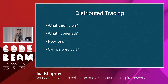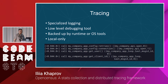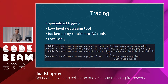Let's start with distributed tracing. It will help you to answer questions like what's going on, what happened, how long, and my favorite — can it be predicted? Distributed tracing is a special kind of tracing, which in turn is a specialized logging, which is a low-level debugging tool. The main part is backed up by runtime or operating system tools, giving you traces for function calls or messages in Erlang. But the main drawback for our topic today is that it's local only.